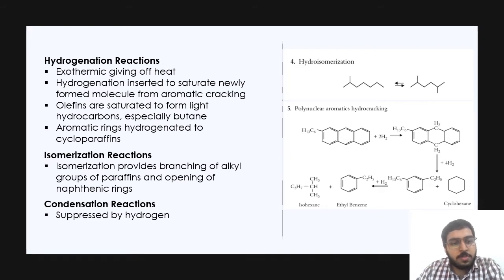Now let's come to the isomerization reaction. Isomerization provides branching of alkyl groups of paraffins and opening of naphthenic rings. Finally, the condensation reactions are suppressed by hydrogen.